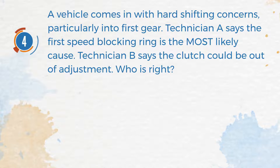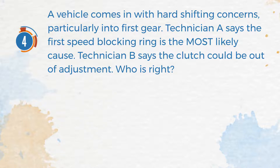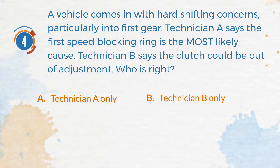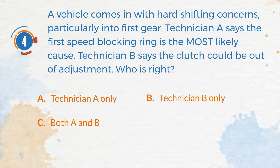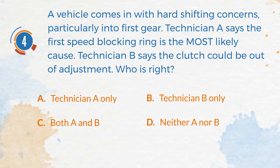particularly into first gear. Technician A says the first speed blocking ring is the most likely cause. Technician B says the clutch could be out of adjustment. Who is right? A. Technician A only. B. Technician B only. C. Both A and B. D. Neither A nor B.